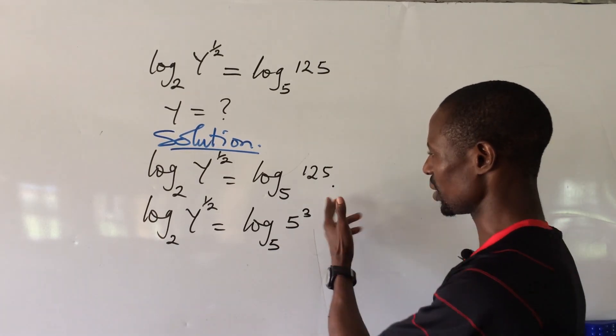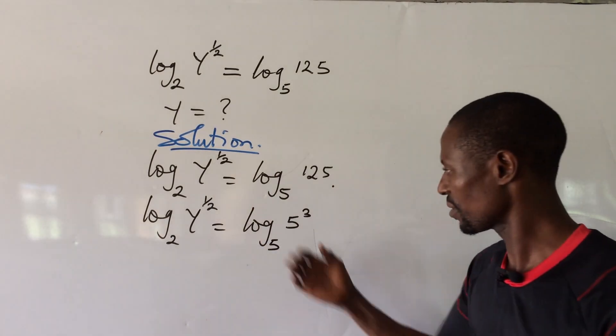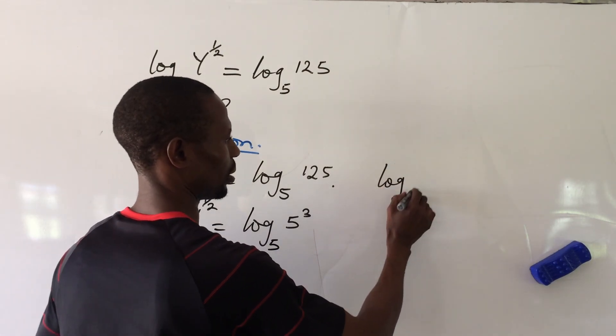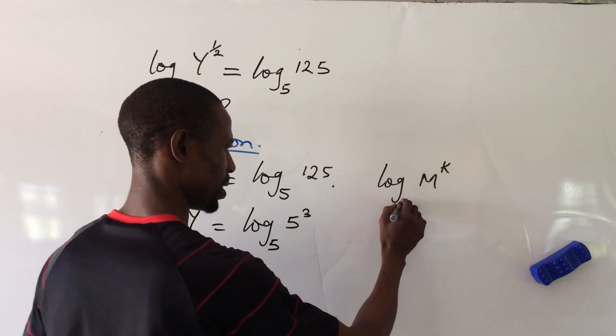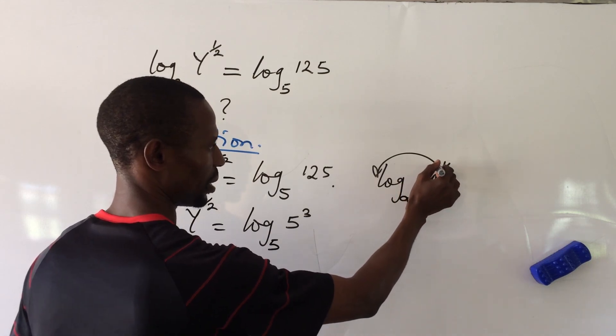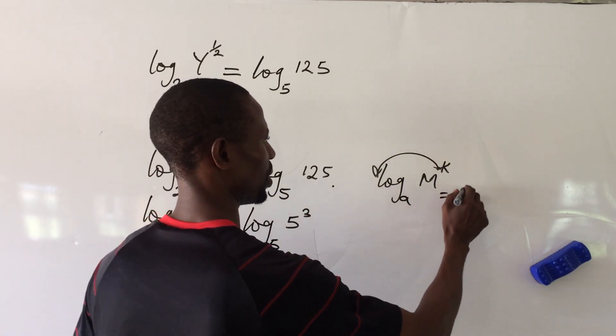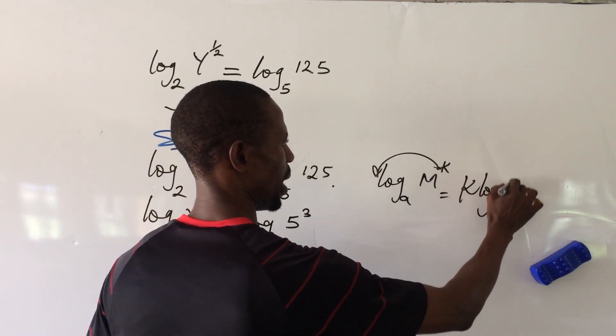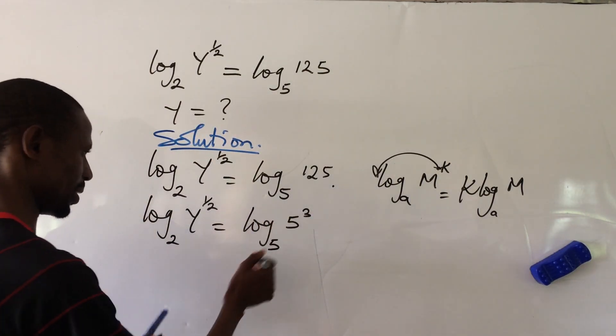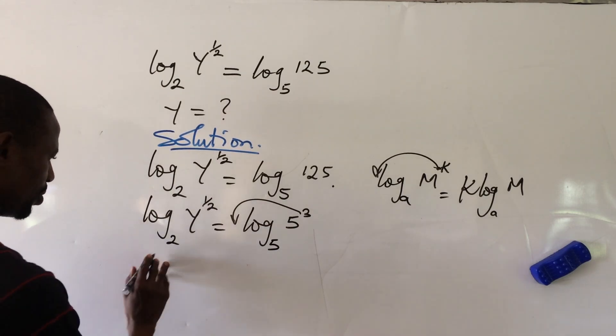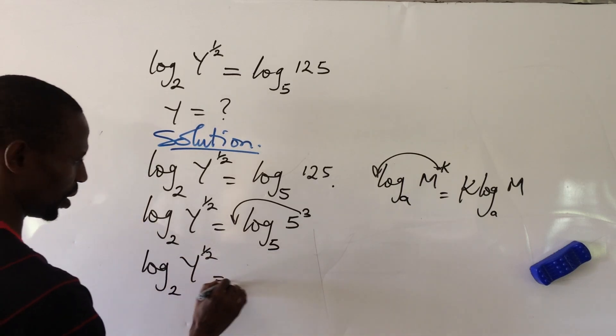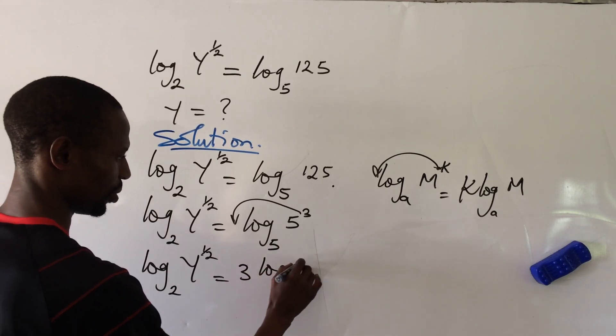Now from here, according to the law of logarithm which says that if you have log m to the power of k base b, you can move this power back. So if we apply that here, this will come back here. So now we have log y to the power of 1/2 base 2 equals 3 log 5 base 5.